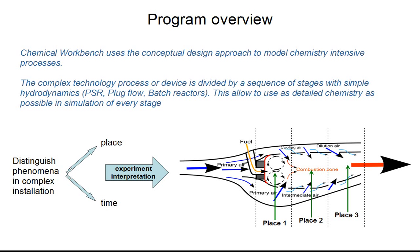The example on the figure shows the gas turbine burner in which a sequence of processes takes place: mixing fuel and air, primary flame, secondary flame, and post-flame zones.